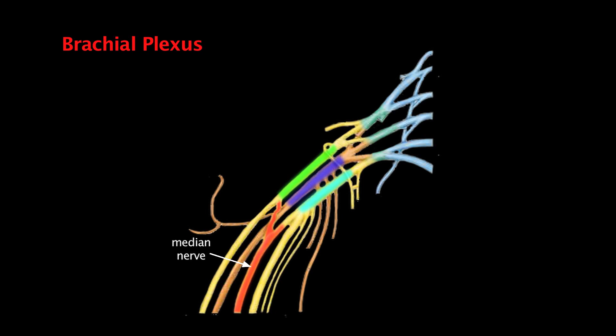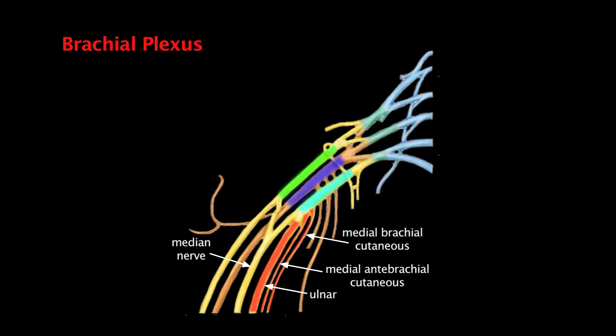Just like the lateral cord, the medial cord also splits. Part of it merges to form the median nerve, and the other part forms the ulnar nerve — the nerve you hit when you hit your funny bone. It travels across your elbow, and hitting it produces that funny feeling. Working back up the medial cord, we have the medial antebrachial cutaneous nerve and then the medial brachial cutaneous nerve, and closer to the divisions is the medial pectoral nerve. Notice that all these smaller branches start with 'medial,' which is a helpful way to remember their names since they all come off the medial cord.